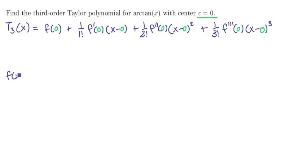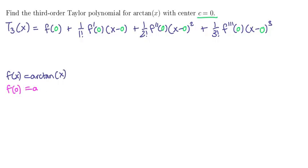Our function is the arctangent of x. If we evaluate this at 0 we get f of 0 is equal to the arctangent of 0, which is just 0. And so that number goes right here.